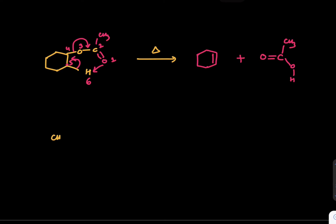Let's say you're given CH3, C double bond O, then oxygen, then CH2, CH2, CH2, CH2, and then again O, C double bond O, CH3. Now this is a little tricky question.